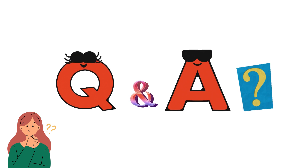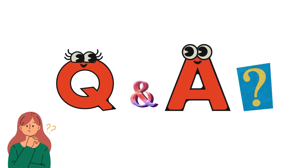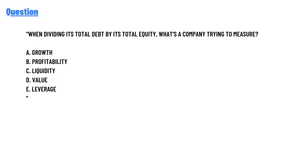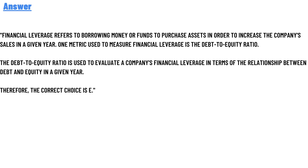Today's question is: when dividing a company's total debt by its total equity, what is the company trying to measure? Option A: growth. Option B: profitability. Option C: liquidity. Option D: value. Option E: financial leverage.